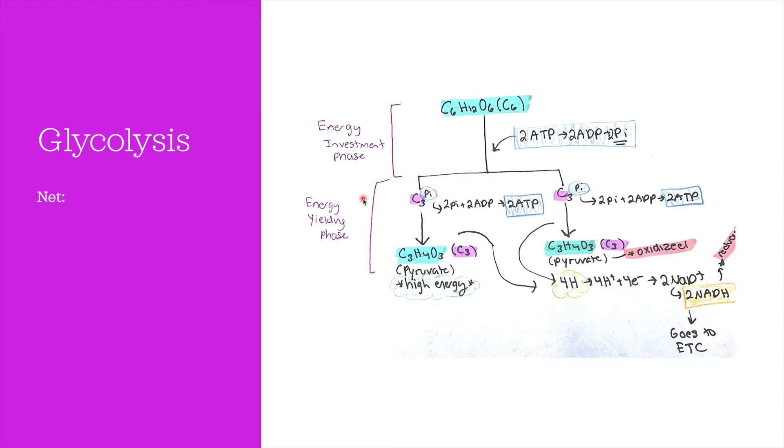Then we enter the energy yielding phase. Here the inorganic phosphates are released from the C3 compounds and combined with ADP to form ATP. So four ATP molecules are produced in total. Then finally, two pyruvate molecules are produced.